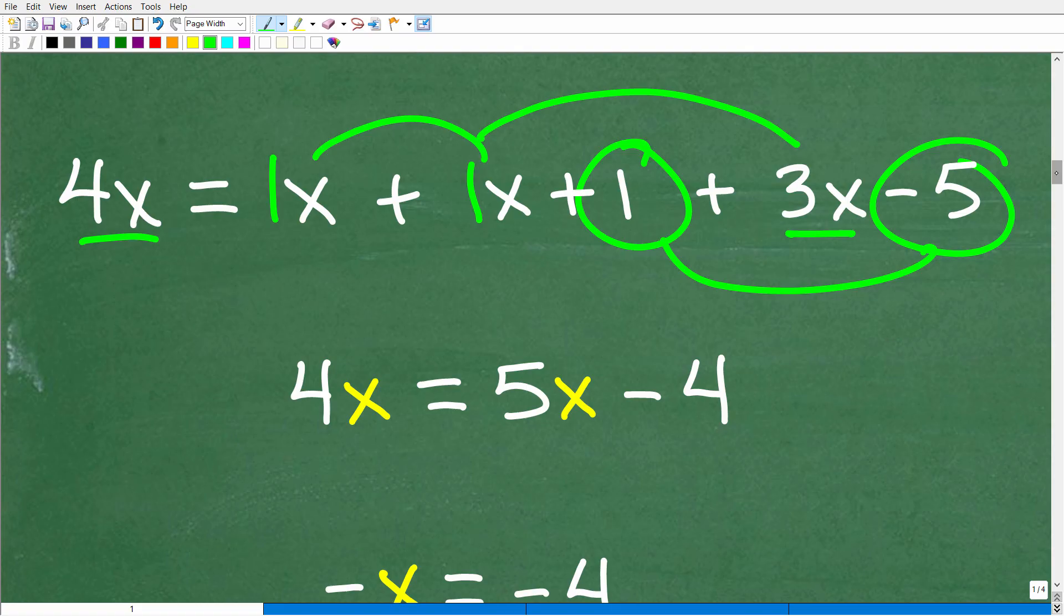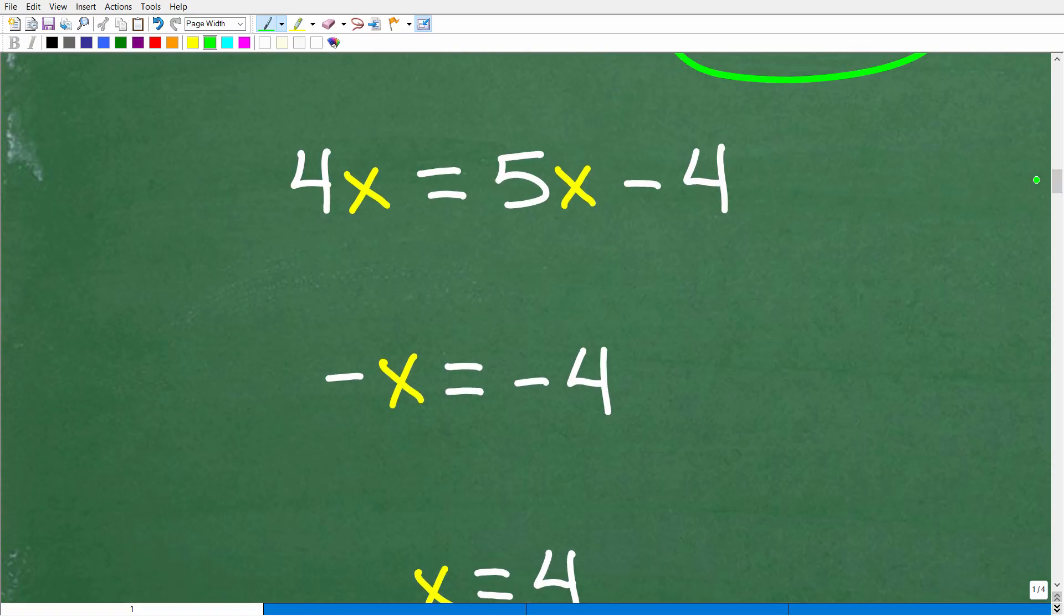So we want to solve for x. There's a couple different things you could do here. Some of you that are more experienced in algebra, you could subtract 4x from both sides of the equation. But typically, we like to put our variables on the left-hand side of the equation and our numbers on the right. Either way, it's going to work out. But here, I'm going to subtract 5x from both sides of the equation. So I'm going to get all my variables together. And when I add down, I'm going to get 4x plus a negative 5x. That's negative 1x. You've got to be very careful with these positive and negative values. So this is negative x or negative 1x equal to negative 4.